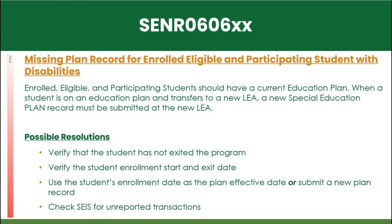SCNR 0606 is a missing plan record for a student with an active IEP in the current LEA of enrollment. This most often occurs when a student transfers into a new LEA and their IEP has not been adopted.